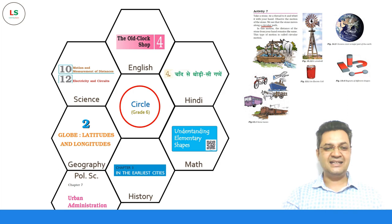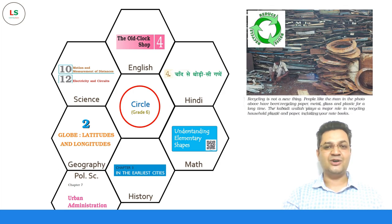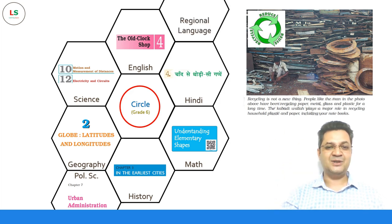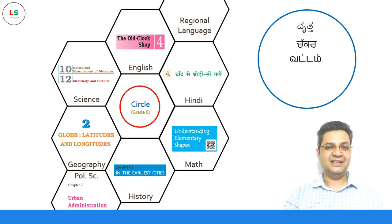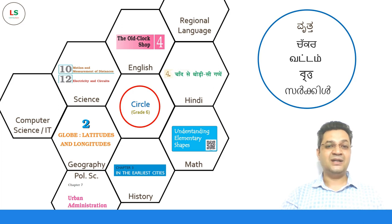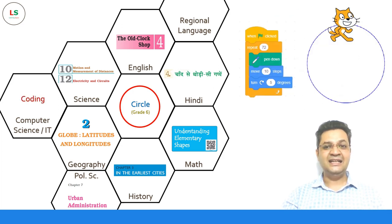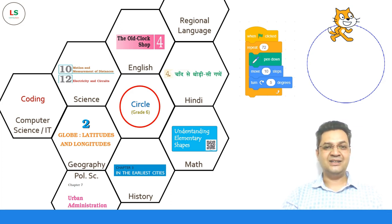In Political Science, urban administration talks about recycle, reduce, and reuse — which is again a circular concept. In the regional language, 'circle' can be expressed as Vritt in Kannada, Chakra in Punjabi, Vattam in Tamil, Vritto in Bangla, and Circle in Malayalam. When it comes to Computer Science or IT, it can be made far more interesting with coding — students can make a circle on the computer.